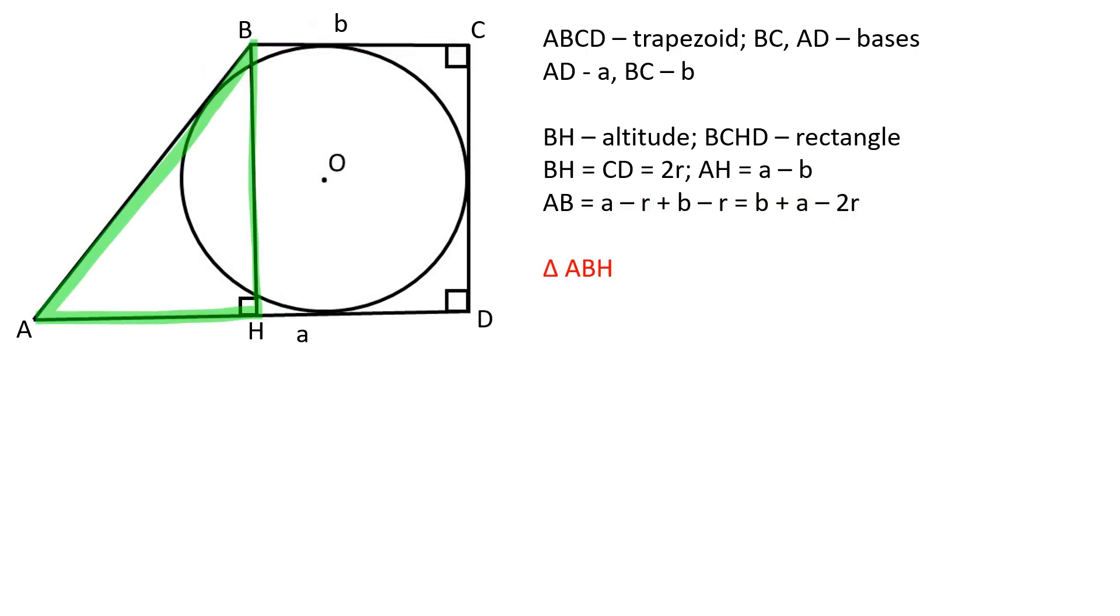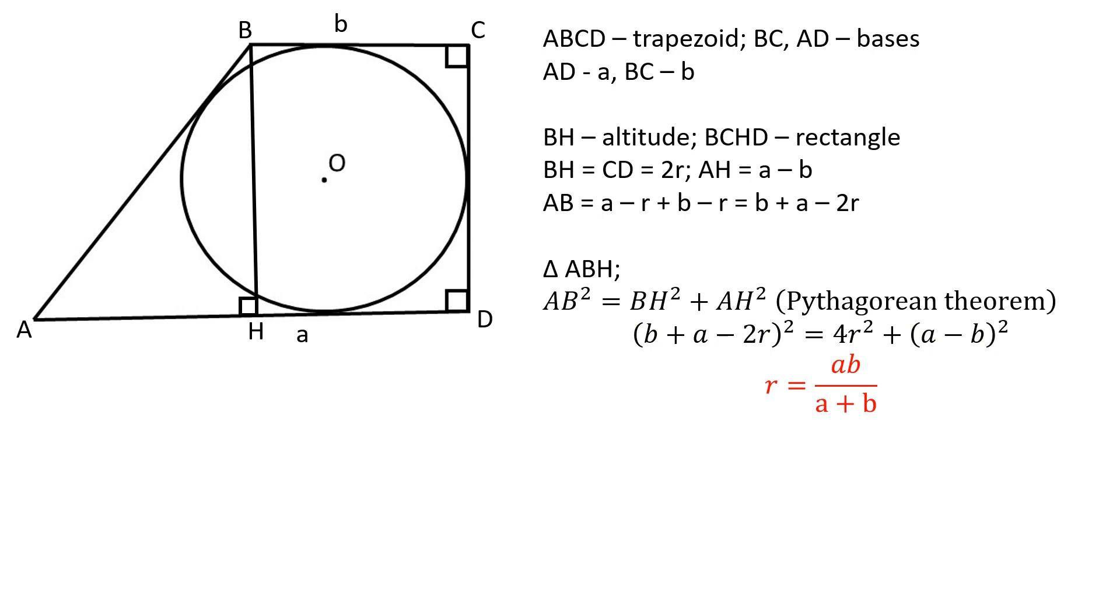Let's review triangle ABH. AB squared is equal to BH squared plus AH squared by the Pythagorean theorem. Let's substitute the side lengths for the corresponding derived expressions. After expanding both sides and simplifying the equation, we are left with the radius equals AB over A plus B.